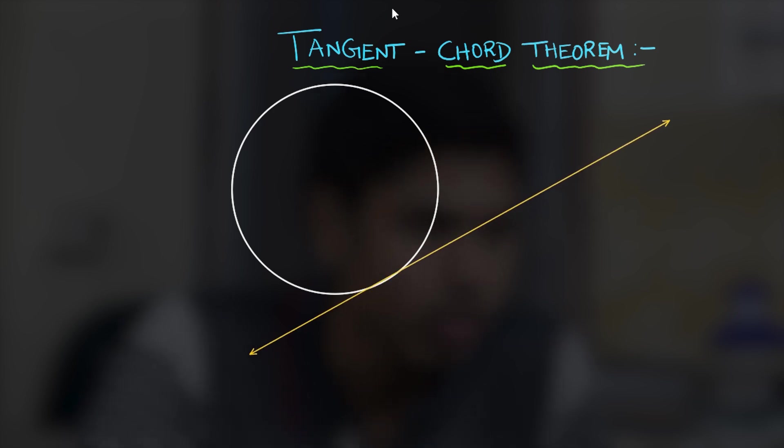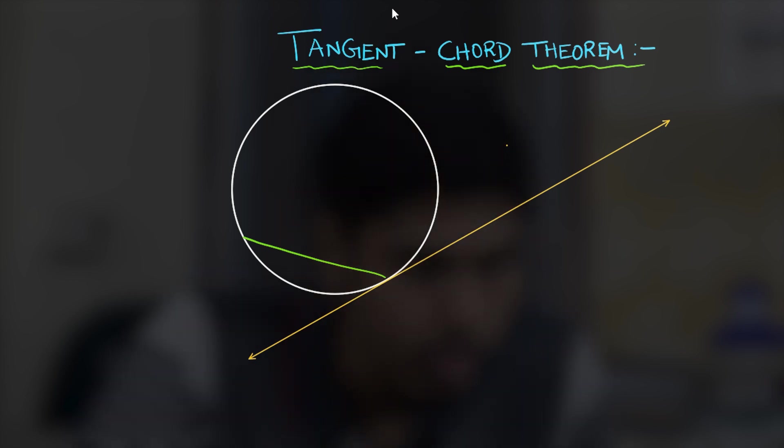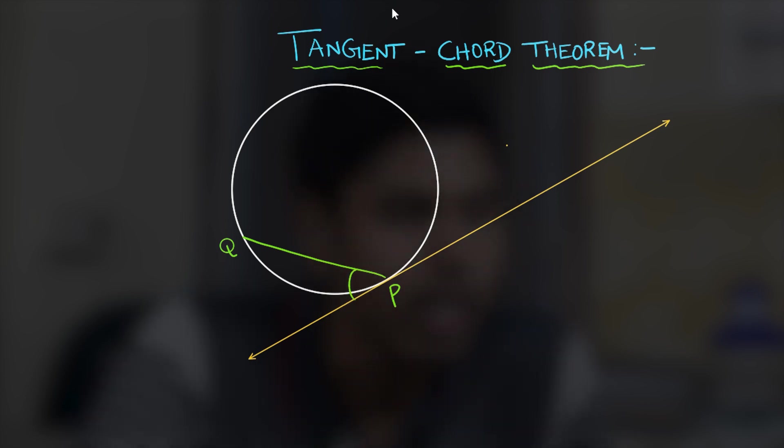Suppose if I consider a circle and a tangent to it which passes through one of the endpoints of a chord of the circle. That is, the point of tangency should be one of the endpoints of the chord of the circle. In such a configuration the angle made by the chord and the tangent equals the angle made by the chord at its circumference.